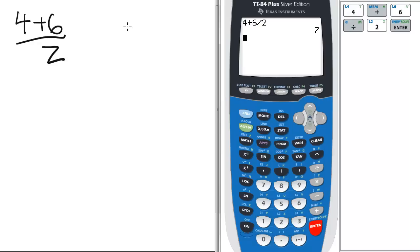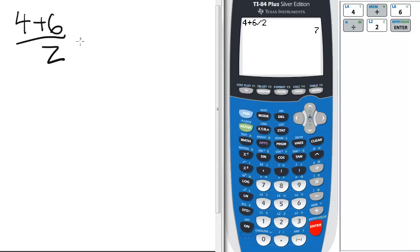7 is the wrong answer, by the way. Because this expression, 4 plus 6 over 2, does not equal 4 plus 6 over 2.